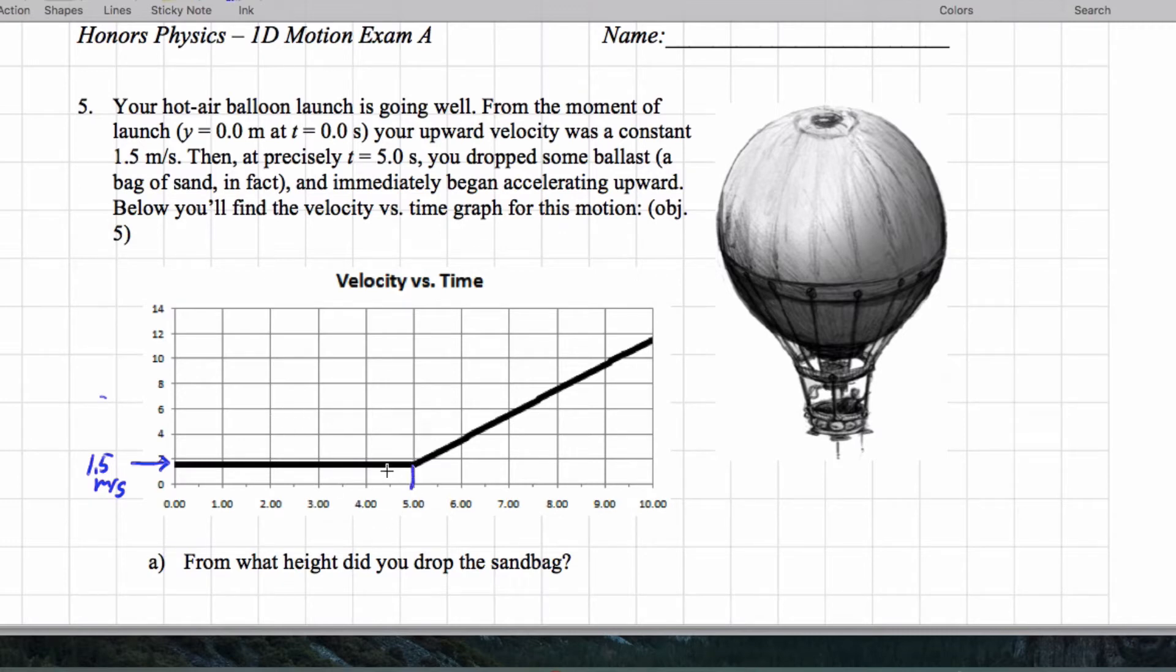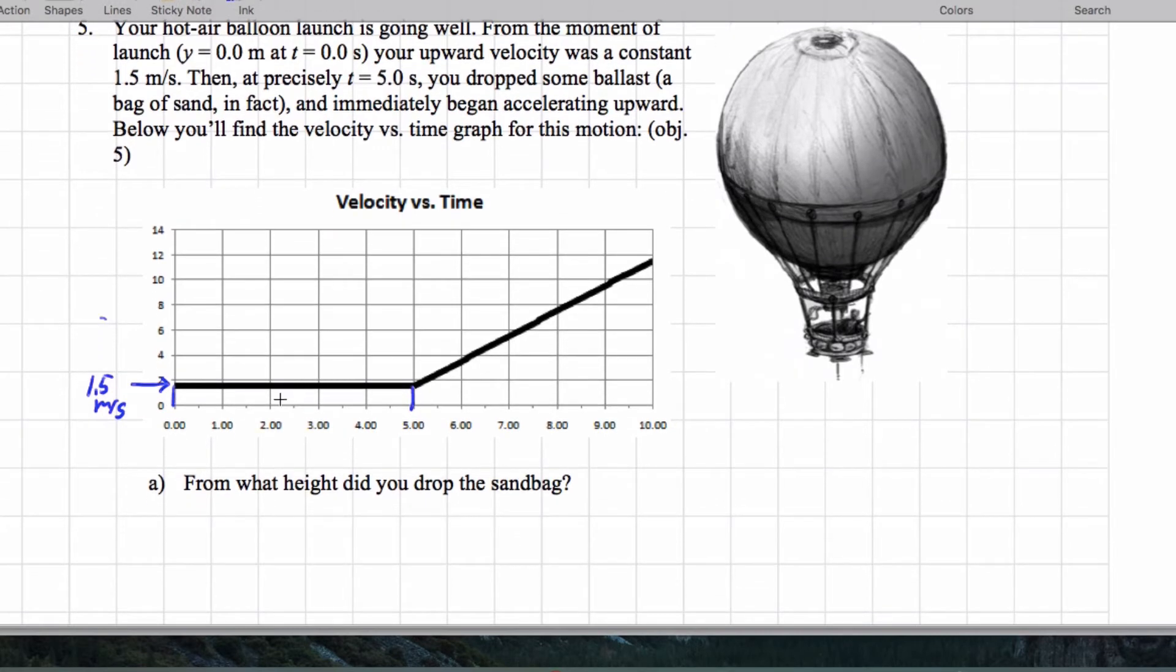Now it turns out, if we remember from last year, the area gives us the displacement. So that's going to be 1.5 times 5, which is going to give us a height of 7.5 meters.